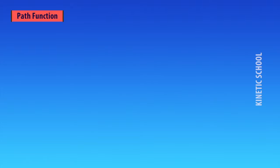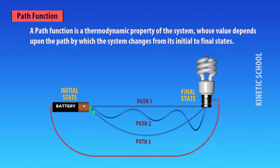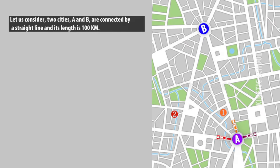A path function is a thermodynamic property of the system whose value depends upon the path by which the system changes from its initial to final states.